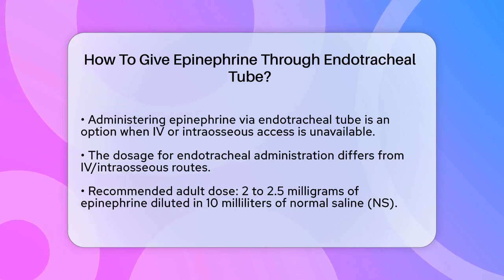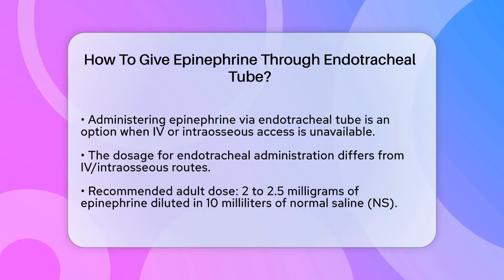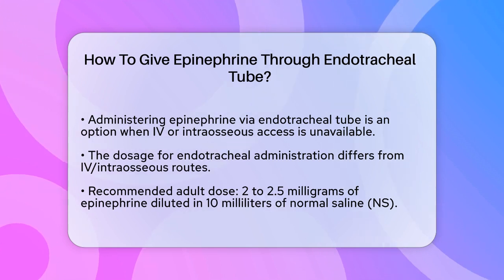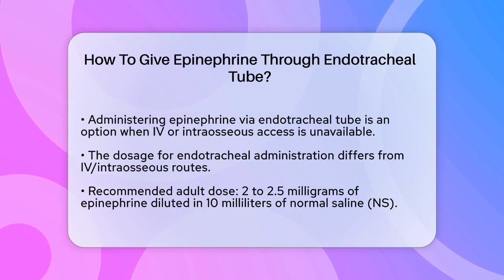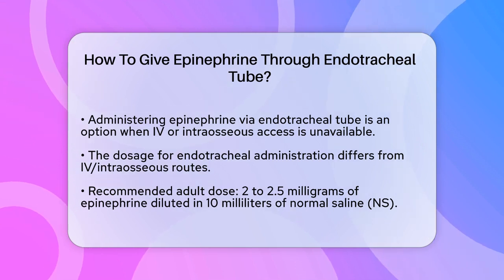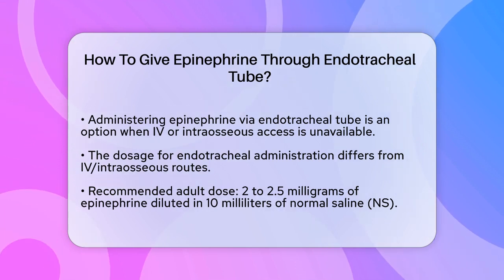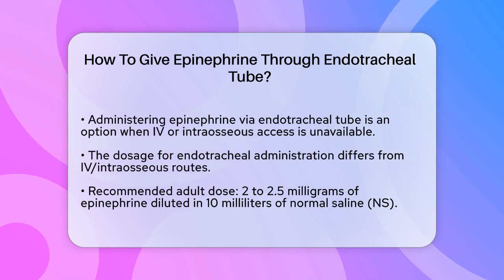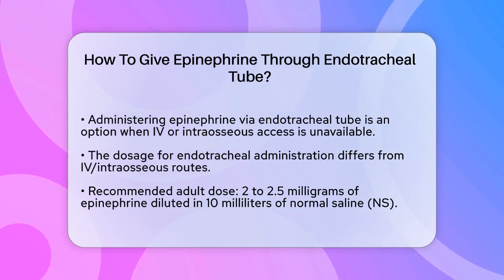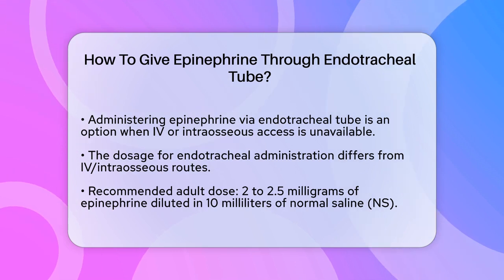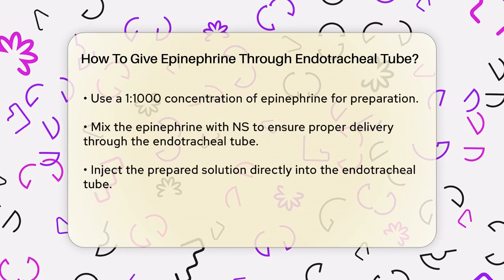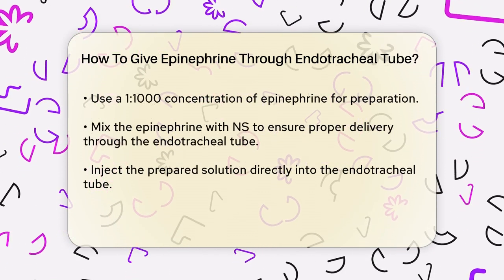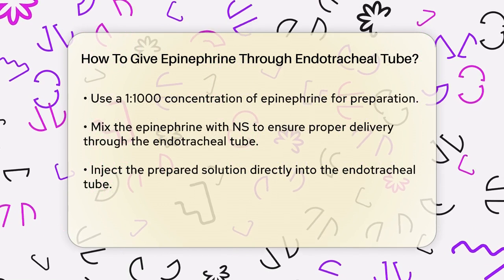First, it's crucial to understand that the dose of epinephrine for endotracheal administration is different from the IV or intraosseous route. For adults, the recommended dose is 2 to 2.5 milligrams of epinephrine, which needs to be diluted in 10 milliliters of normal saline. To prepare the dose, you would typically take 2 to 2.5 milligrams of epinephrine from a 1:1000 concentration and mix it with 10 milliliters of NS.